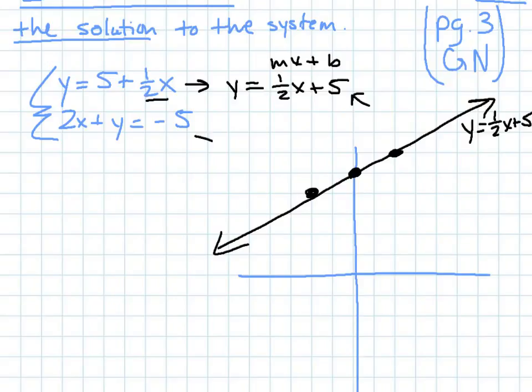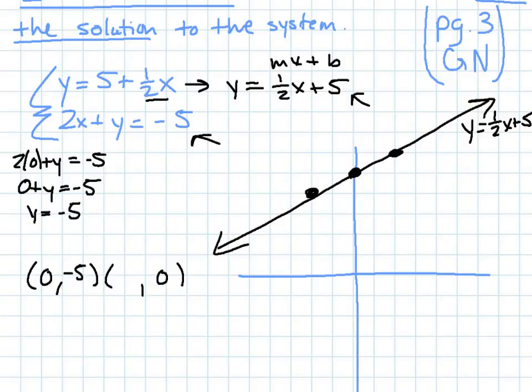Then I'm going to graph this one. But because it's in standard form, I'm going to use my x and y-intercepts. So that means I'm going to plug in 0 for x and I'm going to plug in 0 for y and figure out what my values are. So if I plug in 0 for x, that means 2 times 0 is 0 and 0 plus y is y. So when x is 0, y is negative 5. Do the same thing for y. Plug in 0 for y. 2x plus 0 is 2x. And I'm going to divide by 2 to solve for x, which gives me negative 5 halves.